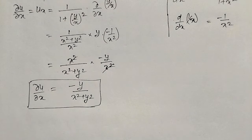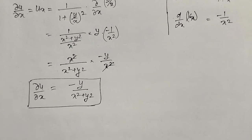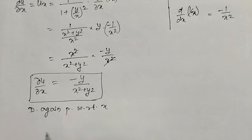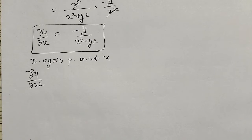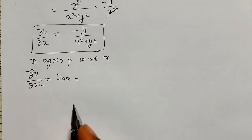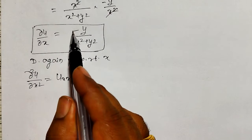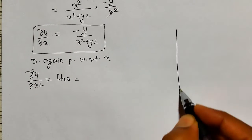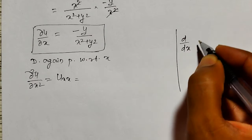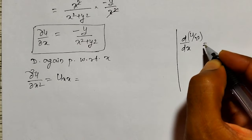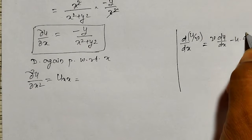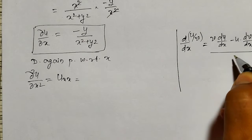I want the second order partial derivative, ∂²u/∂x², by differentiating again partially with respect to x. To avoid confusion, I will use the quotient rule. The quotient rule in ordinary derivatives: d/dx of u divided by v is v into du/dx minus u into dv/dx, whole divided by v square.